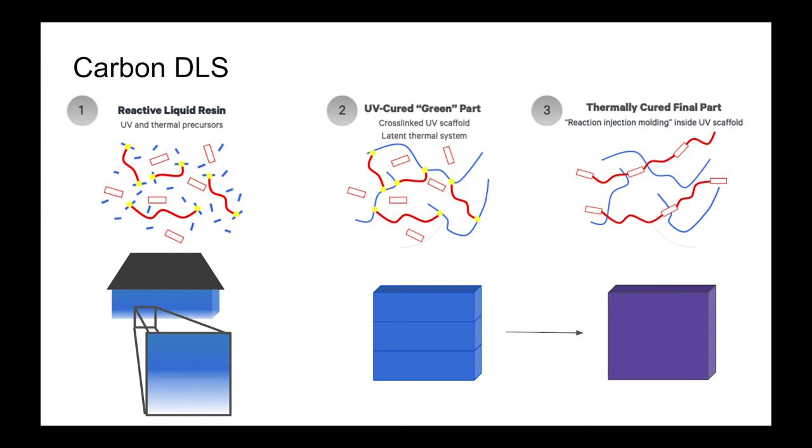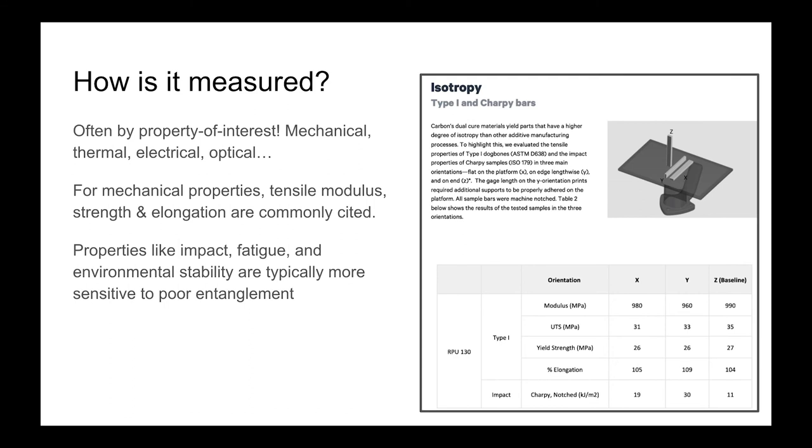And finally, how is isotropy measured? Often this is just by property of interest. Parts can be anisotropic in their mechanical, thermal, electrical, or optical response. For mechanical properties, tensile modulus, strength, and elongation are commonly cited, but properties like impact, fatigue, and environmental stability are typically more sensitive to poor entanglement.